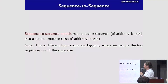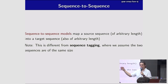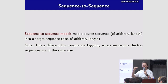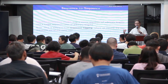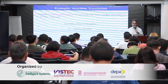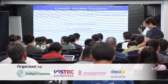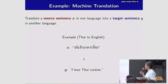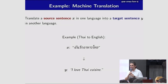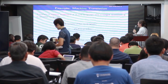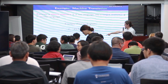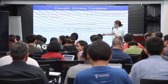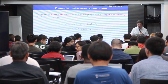Sequence-to-sequence models are useful to map from a source sequence of arbitrary length into a target sequence also of arbitrary length. This is different from sequence labeling where we assume input and outputs have the same number of words. Here we want to map strings to other strings with no restriction on length. Machine translation is one example — the goal is to translate from a source sentence in one language, here Thai, into English, and learn a system that handles new sentences.